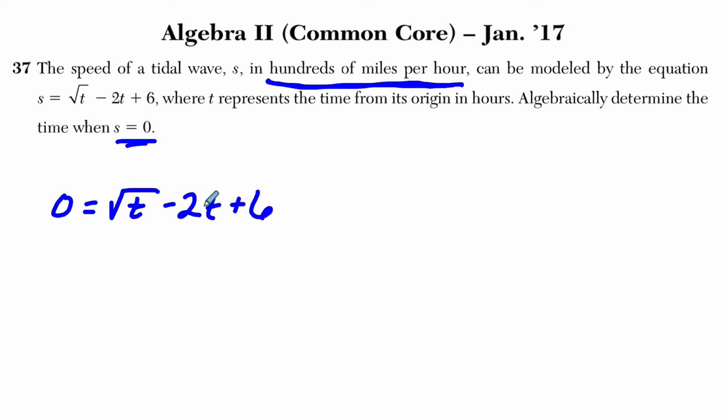Okay, so let's just write that down. S is 0, and it's the square root of T minus 2T plus 6. Now, when you have a situation where you have a polynomial equal to 0, they want you to do some kind of factoring. And here, if you're having a hard time factoring, one thing you can try is switch the order of the terms. Negative 2T plus the square root of T plus 6.